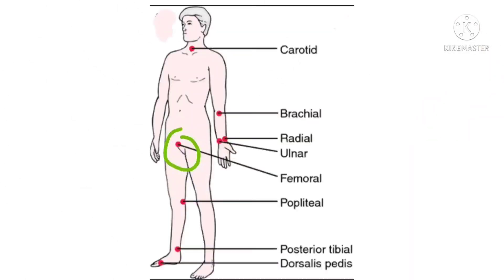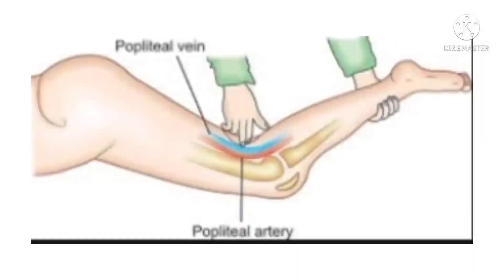Another pulse point is the femoral pulse, located in the inner thigh at the mid-inguinal point, halfway between the pubic symphysis and the anterior superior iliac spine.